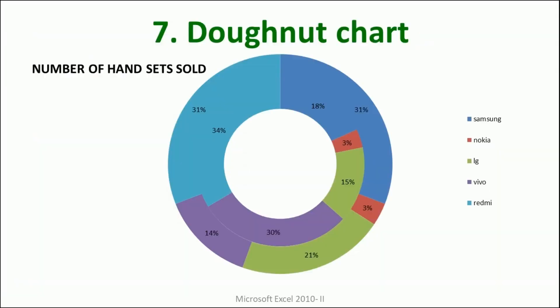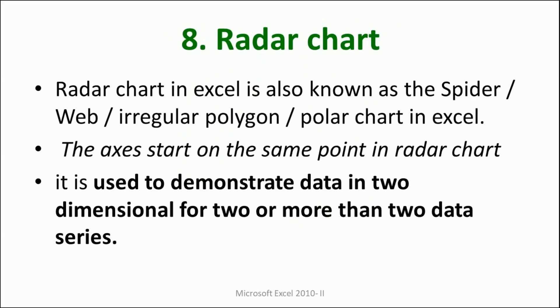Now let's learn about the radar chart. The radar chart in Excel is also known as a spider chart, web chart, irregular polygon, or polar chart. The axes all start from the same point in a radar chart, and all dimensions will have the same starting point. It is used to demonstrate data for two or more than two data series.